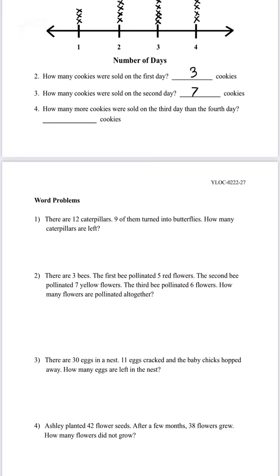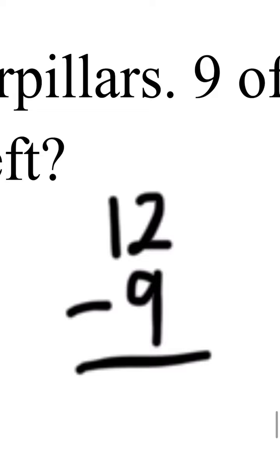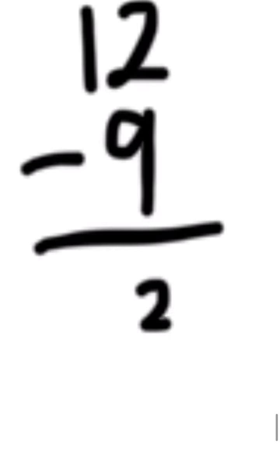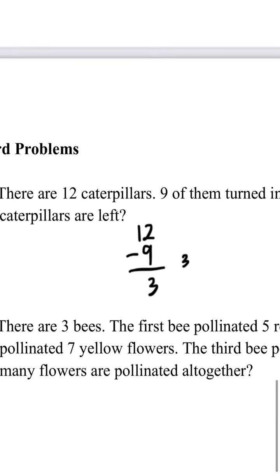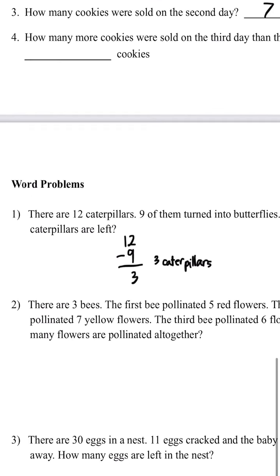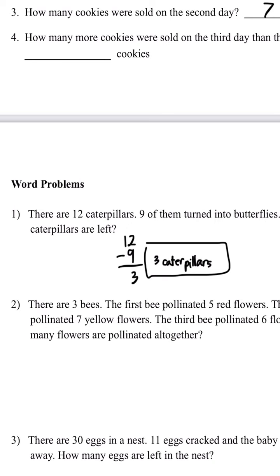For this page we have word problems. Let's look at number one: there are 12 caterpillars, nine of them turned into butterflies — how many caterpillars are left? To find out how many are left, we need to subtract 9 from 12. Twelve minus nine is three, so three caterpillars is the answer for number one.